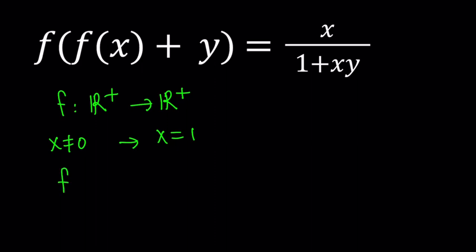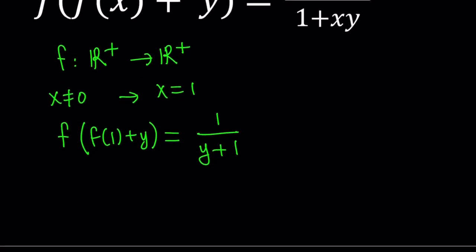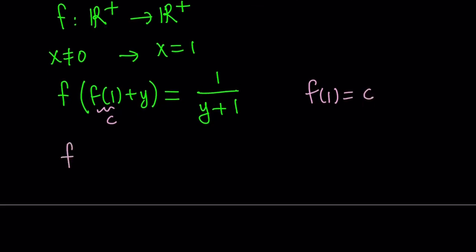That gives us f(f(1) + y) = 1/(1 + y), or you can write it as 1/(y + 1). Notice that f(1) is a constant. f(1) is a constant, so let's go ahead and call that something. How about c? So if we set f(1) equal to c, then we're going to get a nicer equation.